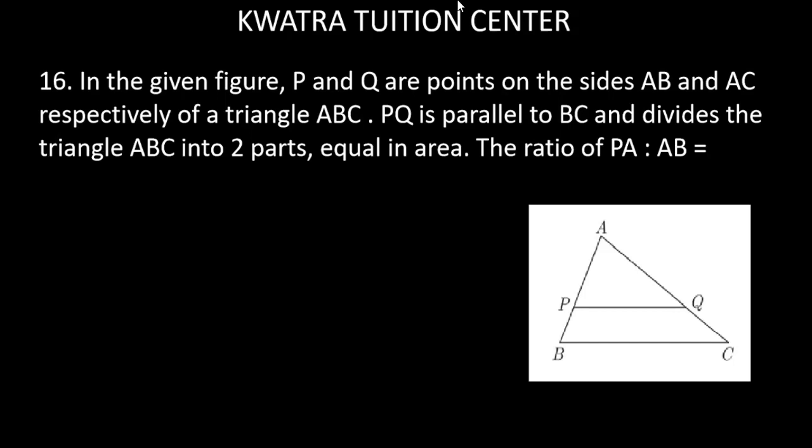In the given figure, P and Q are points on sides AB and AC respectively of triangle ABC. PQ is parallel to BC and divides the triangle into two parts equal in area.